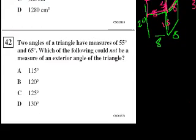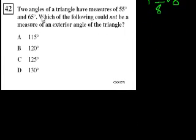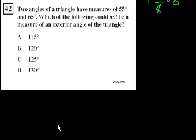Problem 42. Two angles of a triangle have measures of 55 and 65 degrees. Which of the following could not be a measure of an exterior angle of the triangle? This is a good time to introduce what an exterior angle is. I'll draw a triangle since that's what this question is about.